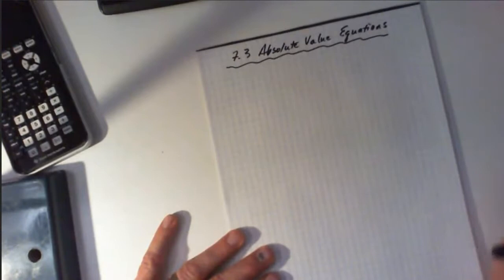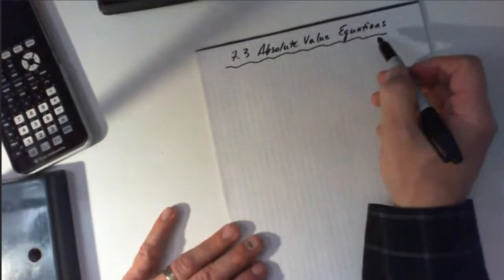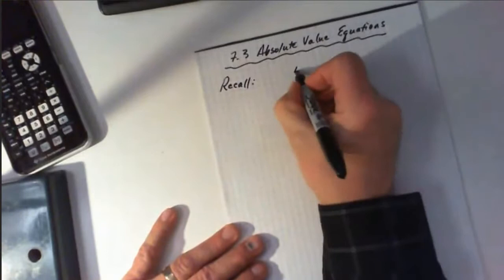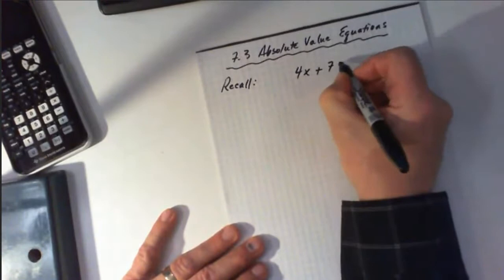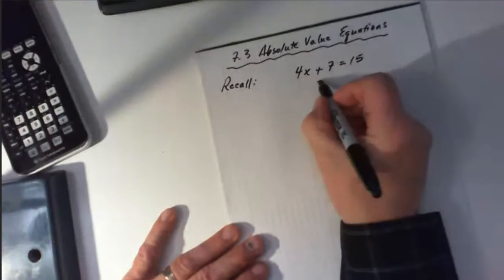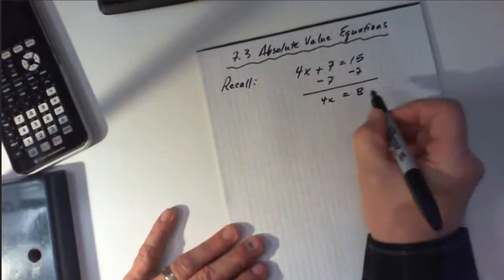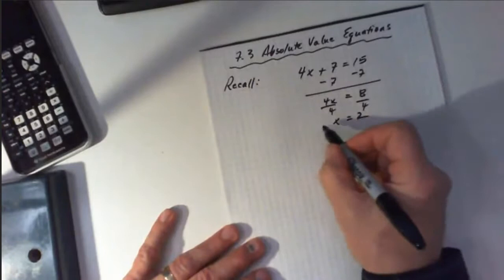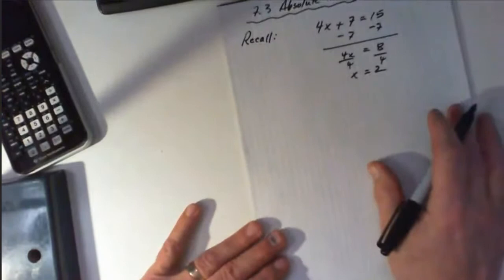Hi, I'm in here for Dylan, and what I'm doing is a lesson on 7.3, which is absolute value equations. Now, if you can recall from junior high, when you were given an equation like 4x plus 7 equals 15, you went through the steps to determine what the value of x is. From here, you obviously checked your answer by verifying it in the equation.